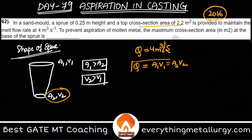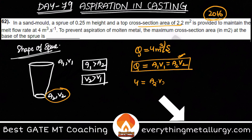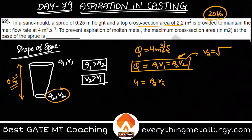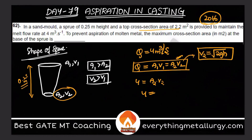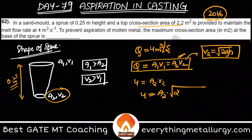This is called the continuity equation. So now you take the second equation because you need to calculate A2. So 4 equals A2 into V2. What is V2? We know the height is 0.25 meter and there is no external force here. The metal is coming down due to gravity, so the velocity is built up with the help of gravity, just like a free falling body. Therefore V2 equals root of 2GH.